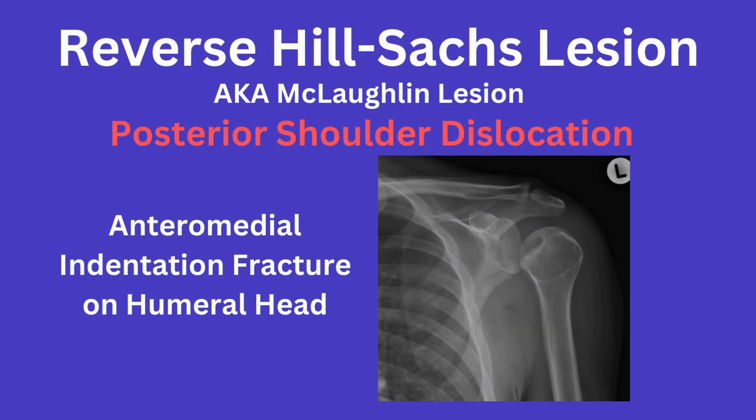You can think of the reverse HILSACS lesion, otherwise known as the McLaughlin lesion, as the opposite, in which you have a posterior dislocation of the shoulder, which is less common. With the posterior dislocation, there may be impaction of the anterior aspect of the humeral head into the glenoid, leading to the reverse HILSACS lesion.